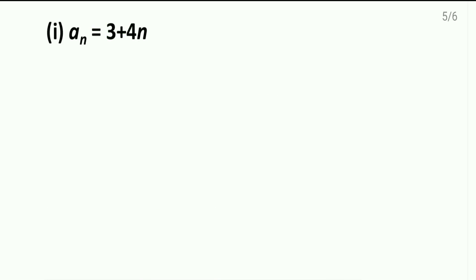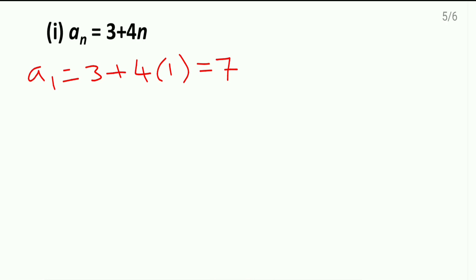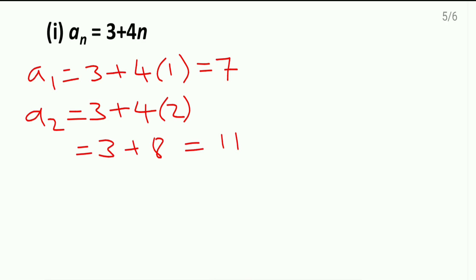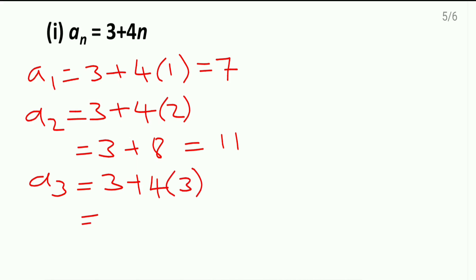They have given the formula for the nth term. I'll write down the first term by replacing n with 1: a1 = 3 + 4×1 = 7. Second term: a2 = 3 + 4×2 = 3 + 8 = 11. Third term: a3 = 3 + 4×3 = 3 + 12 = 15.